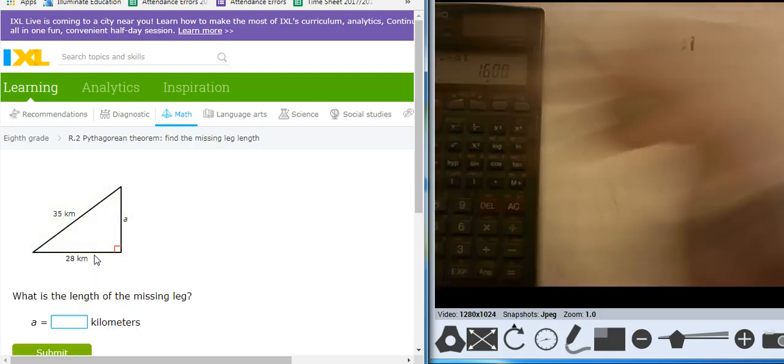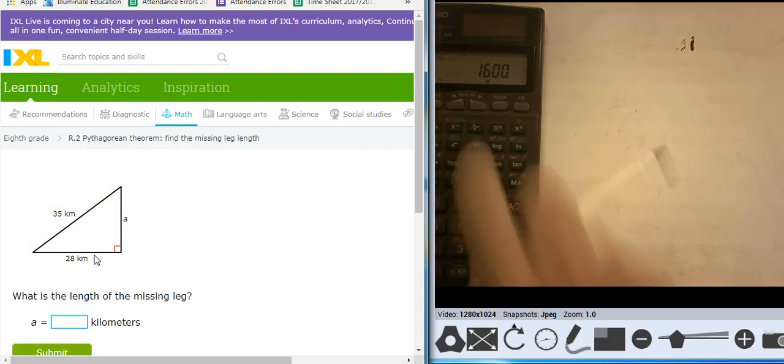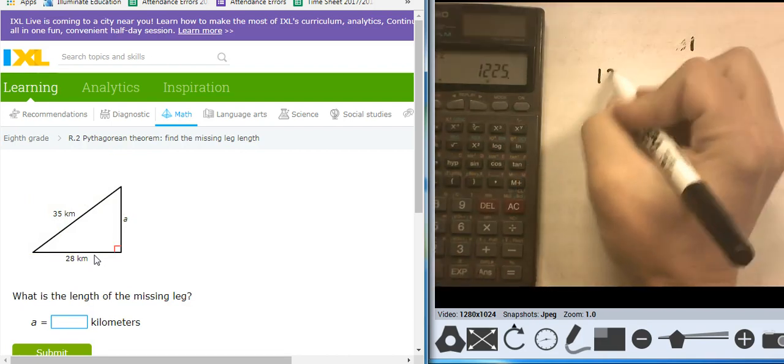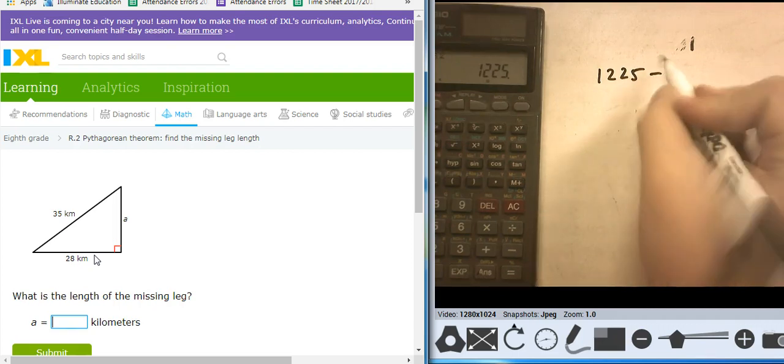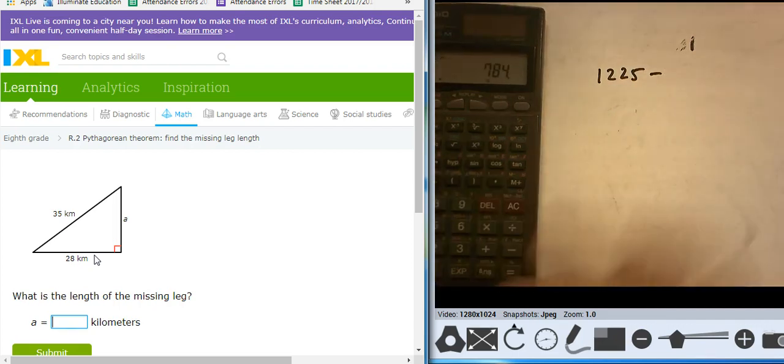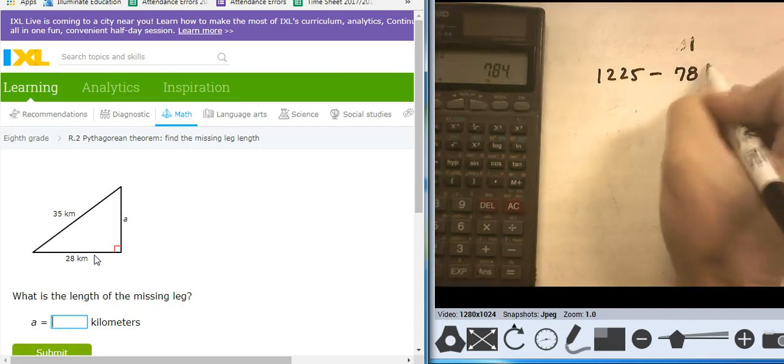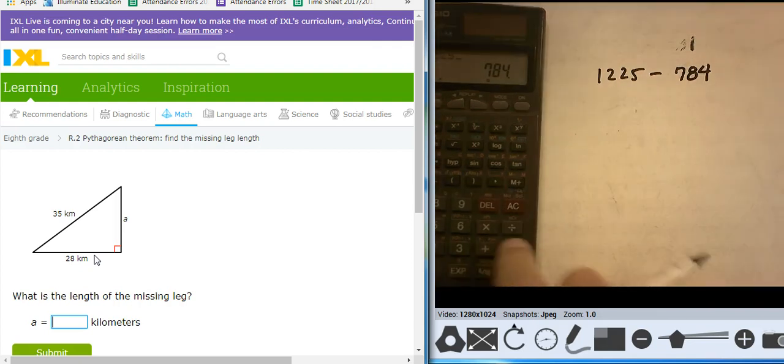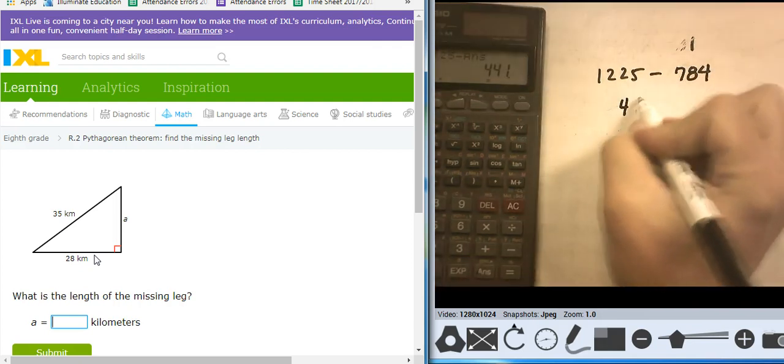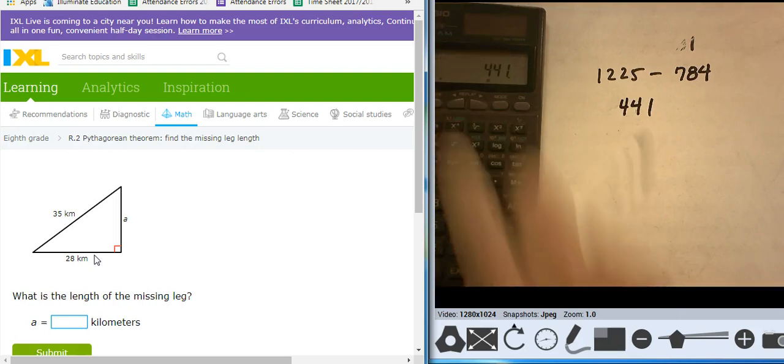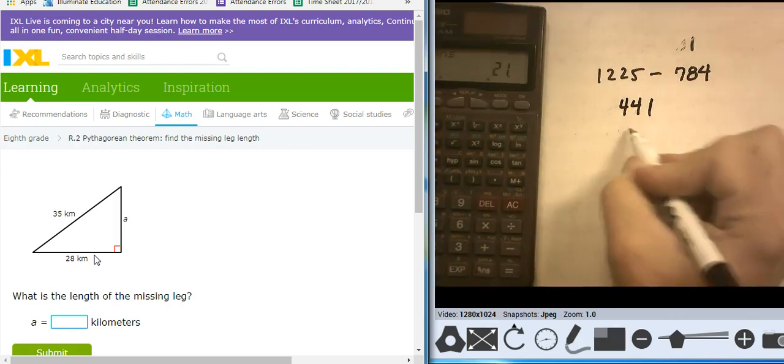35 squared minus 28 squared. 35 squared minus 28 squared, 441. Take the square root of that, feels like it should be about 21. Nice.